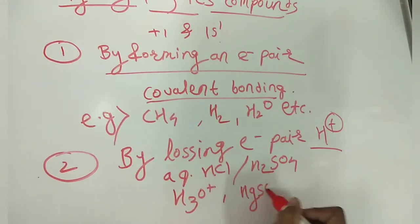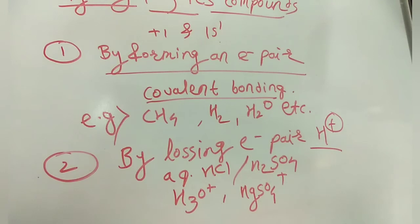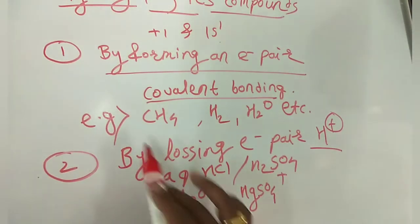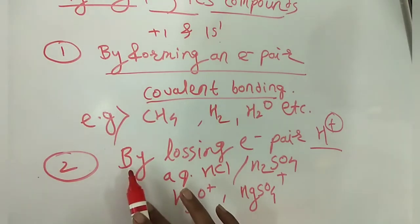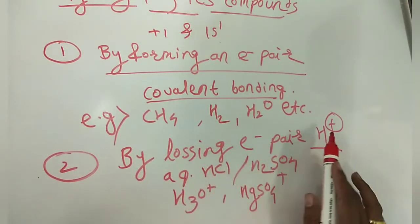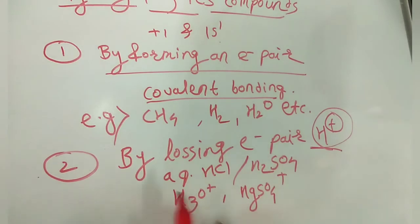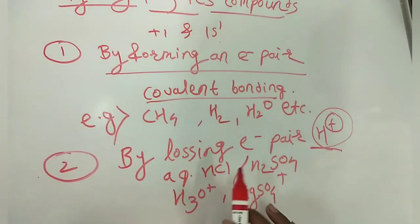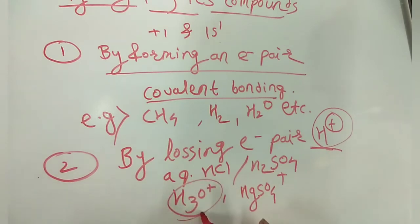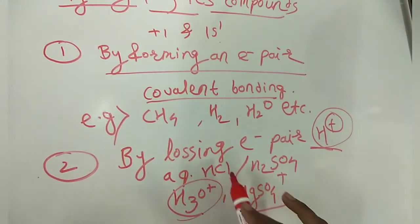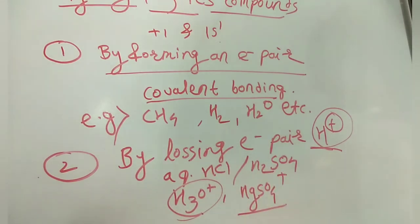Free protons do not exist under normal conditions. In aqueous solution, H⁺ generates the H₃O⁺ ion. In aqueous solutions of HCl and H₂SO₄, H₃O⁺ ions are generated respectively.